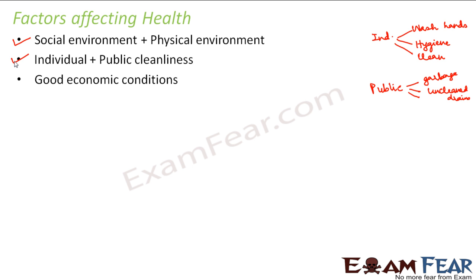The third thing is good economic conditions. Why do good economic conditions also affect our health? Health will be good only when we have everything in proper quantity. We should eat properly to have good physical health. In order to eat proper food and get good nourishment, we need money. If you want to buy vegetables, fruits, or pulses, you need money. In order to earn that money, you need to work. If somebody is very poor and cannot afford good food, it is very obvious that his health is getting affected. So good economic conditions are extremely important for good health.